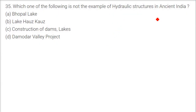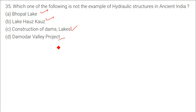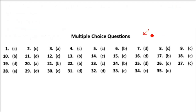Which one of the following is not an example of hydraulic structures in ancient India? Bhopal Lake, Hoskhas, dams and lake construction — they are all examples from our history, showing what state-of-the-art structures existed. The Damodar Valley project is a government multi-purpose dam project.